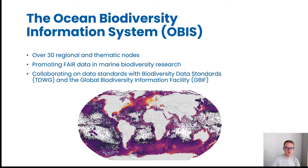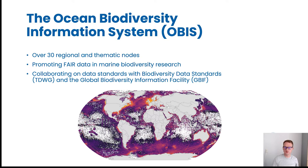OBIS is not just a data system — it's first and foremost a community of practice. Our network currently consists of over 30 regional and thematic nodes who are all publishing marine biodiversity data. Our goal is to promote FAIR data in marine biodiversity research, so this means that our data are open, published using community standards, and that we make use of vocabularies as much as possible.